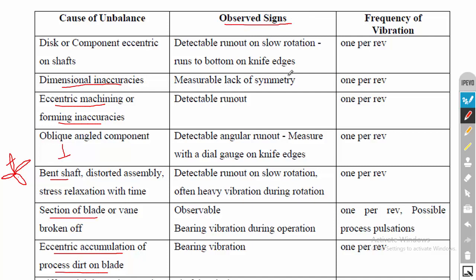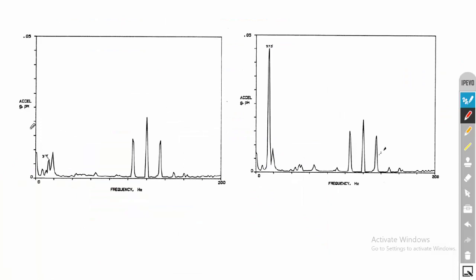These are the observed signatures. The frequency of vibration for unbalance: if you measure the vibration and convert the time domain signal to the frequency domain, you will see a peak at one revolution — that is, a peak at the RPM speed. This is the identification tool for unbalance. For a perfect system, there is no high peak. For an unbalanced system, there is a tall peak at the operating RPM. You must convert RPM to hertz, and the peak will be exactly at the operating speed.